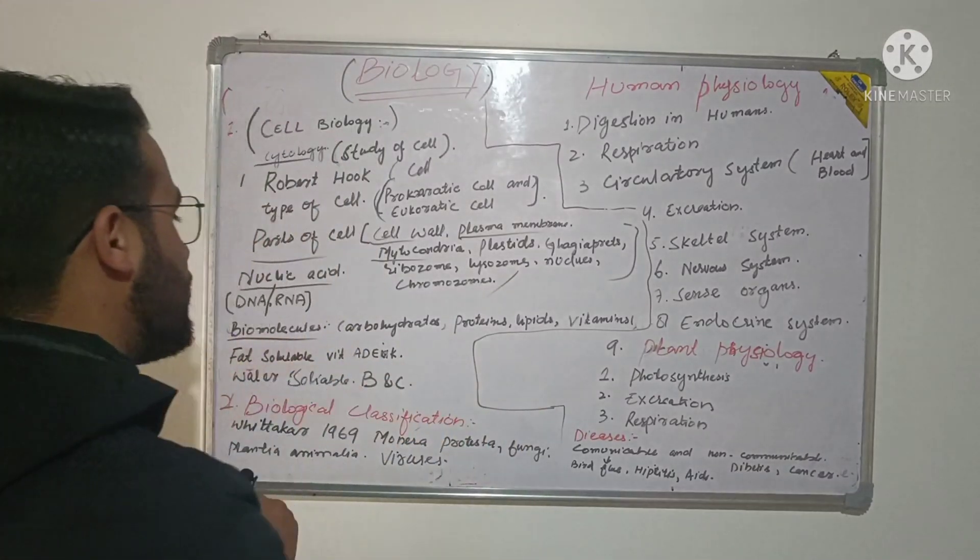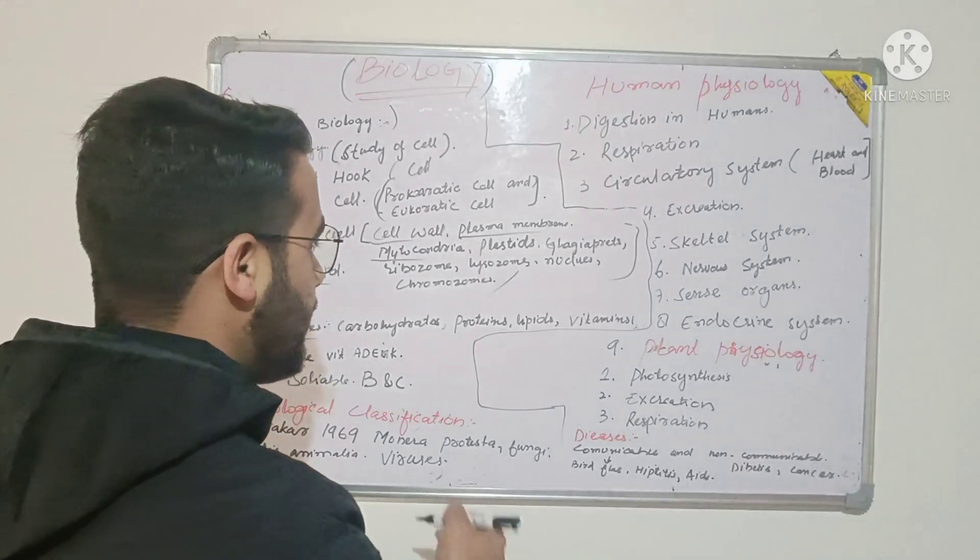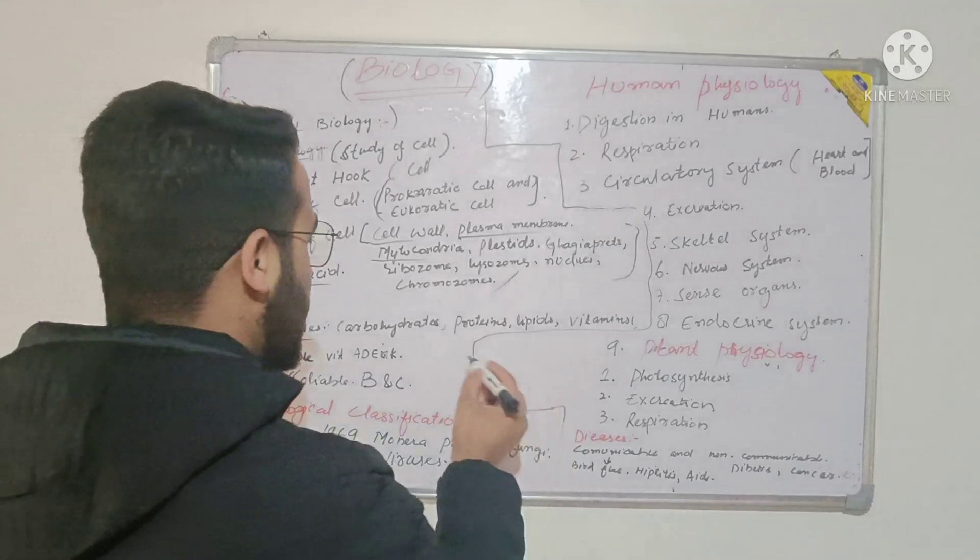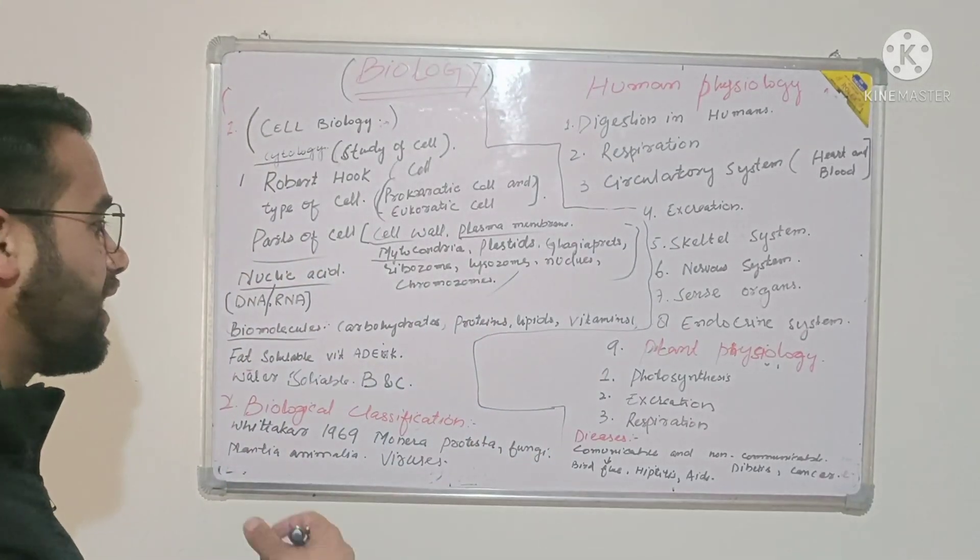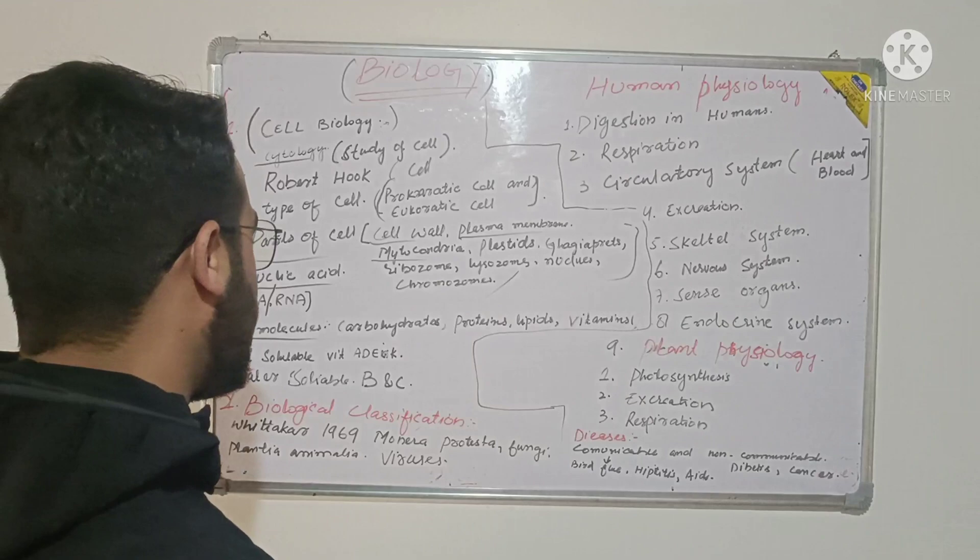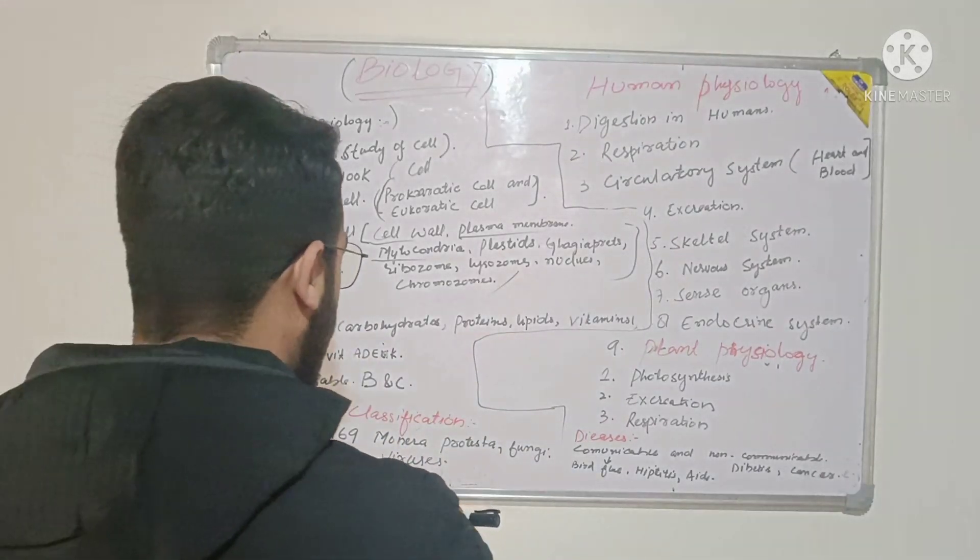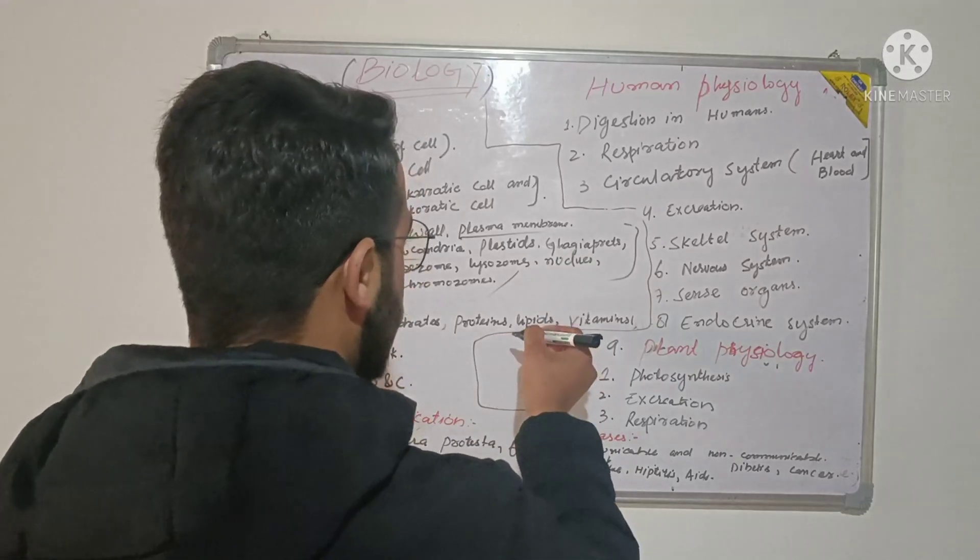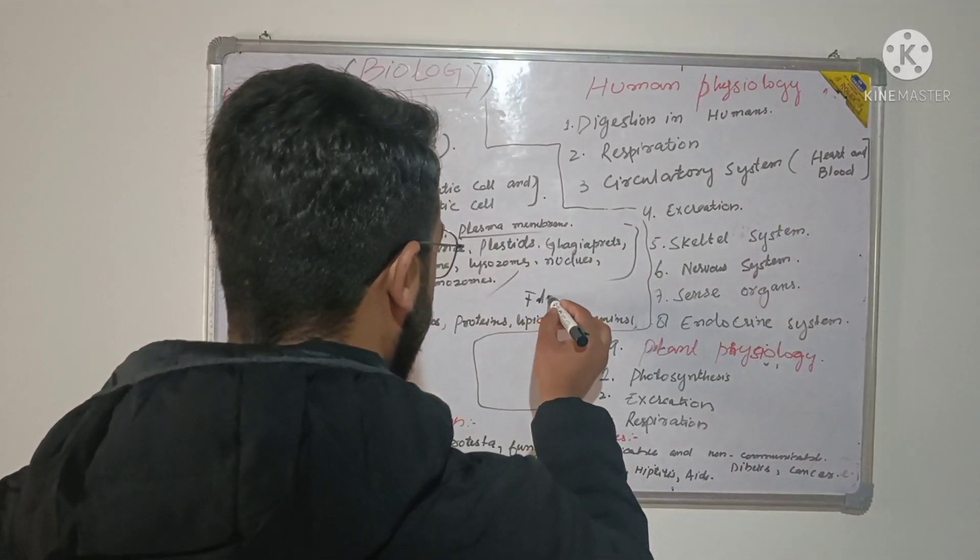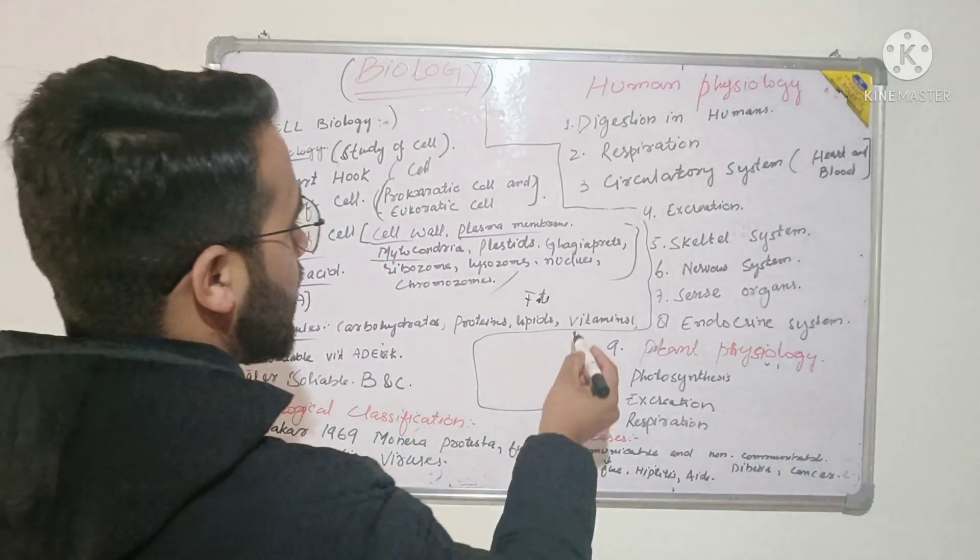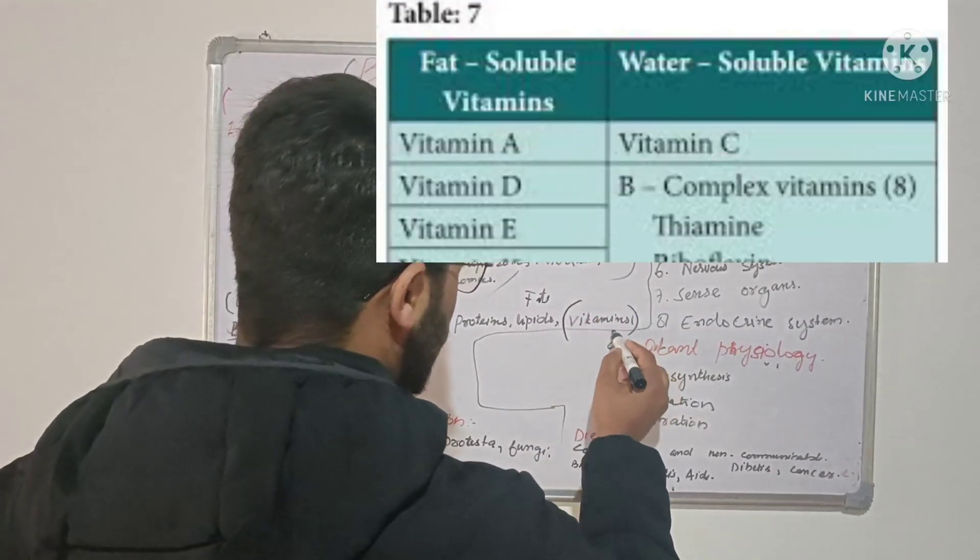Then you will study about biomolecules. In biomolecules you'll study carbohydrates, proteins, lipids, and vitamins. Carbohydrates are made up of monosaccharides and polysaccharides like glucose. Then you have proteins, lipids including saturated fats and unsaturated fats.